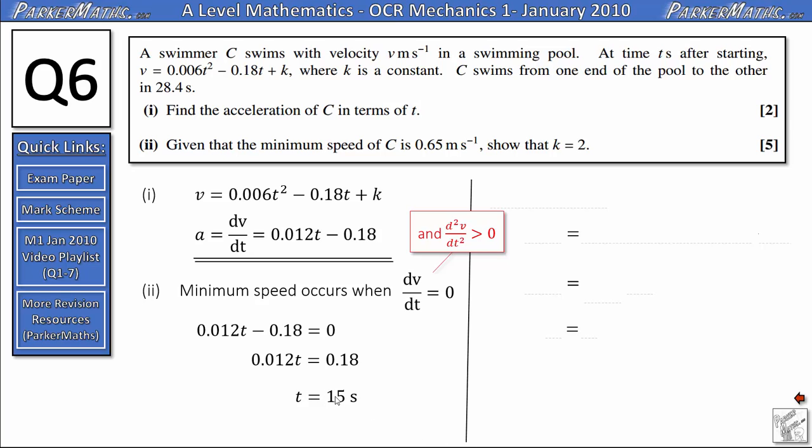What we've found here is the time at which the minimum point on this curve occurs, but we're actually trying to find the minimum speed. All that we need to do now to find the value of k is say that when t equals 15, our velocity here which is 0.65 equals 0.006 multiplied by 15 squared minus 0.18 times 15 plus k.